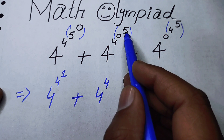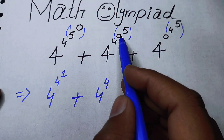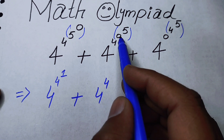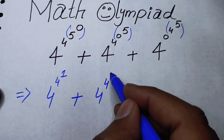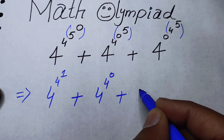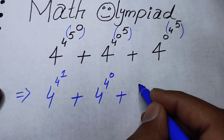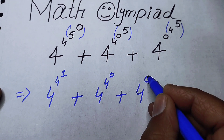Here we solve the exponent 0 to the power of 5. We know that something to the power of 0 becomes 1, and 0 to the power of something is always 0. So 0 to the power of 5 is 0, plus the next term.